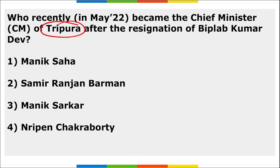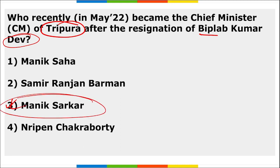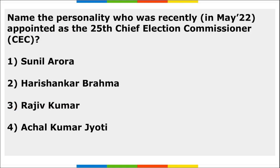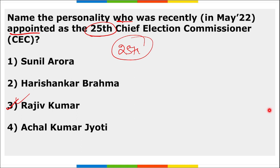After the resignation of Biplab Kumar Deb, Manik Saha became the new Chief Minister of Tripura — the 12th Chief Minister of the state. Rajiv Kumar was appointed as the 25th Chief Election Commissioner, replacing Sushil Chandra.